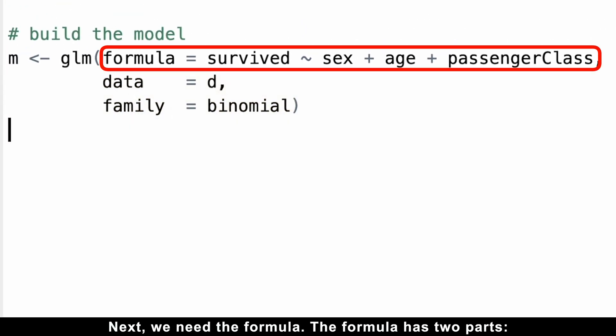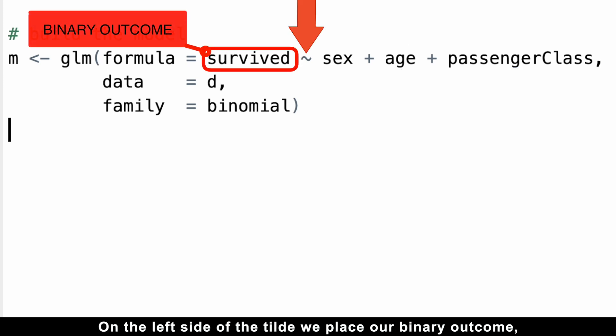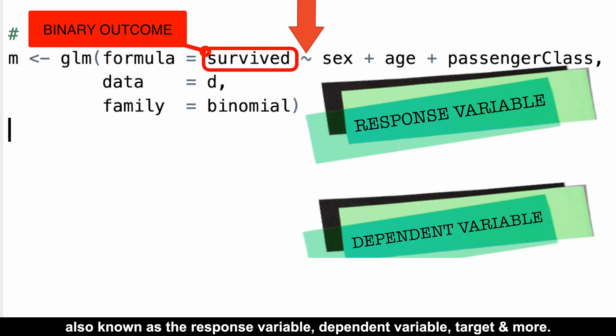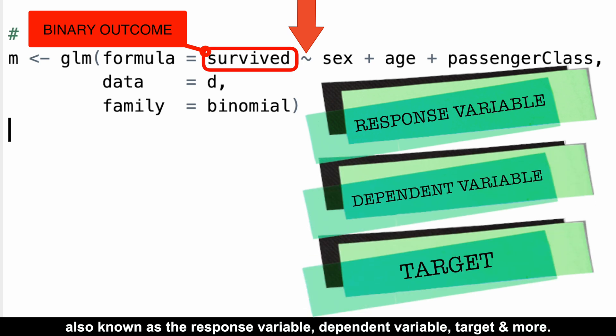Next, we need the formula. The formula has two parts. On the left side of the tilde, we place our binary outcome, also known as the response variable, dependent variable, target, and more.